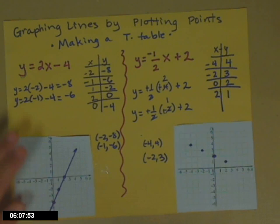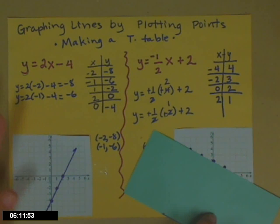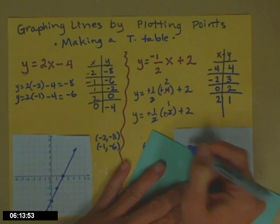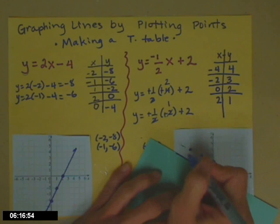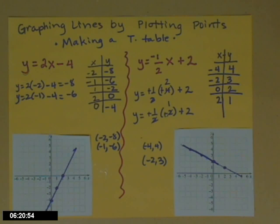If you would get one of the points that didn't line up, you'd go back and you'd check your arithmetic on that point. They should all be on the same line, right? Because we had a linear equation. x to the first power, y to the first power.